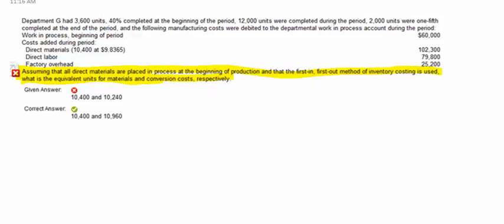I've highlighted the question so that I can read that first before I read all the other detail. It says, assume that all direct materials are placed in process at the beginning of the production and the first-in-first-out method of inventory costing is used.